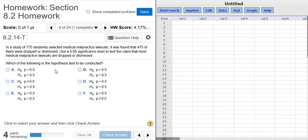In this problem, we're going to do a hypothesis test for a proportion. In a study of 775 randomly selected medical malpractice lawsuits, it was found that 475 of them were dropped or dismissed. Use a 0.05 significance level, that's our alpha, to test the claim that most lawsuits are dropped or dismissed.